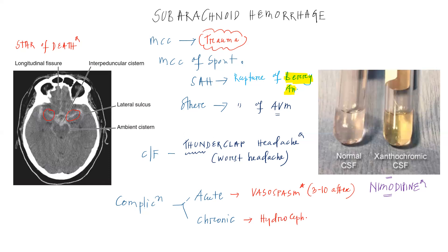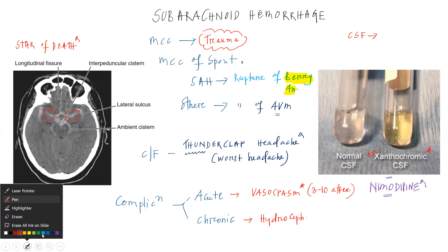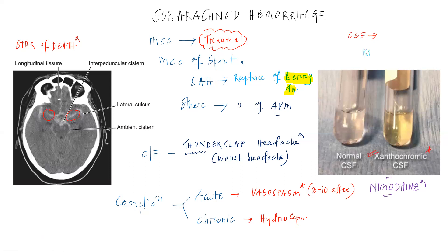Apart from the CT scan, one more important investigation finding to remember is xanthochromic CSF. If you perform a CSF analysis for these patients, you will get yellow-colored CSF known as xanthochromic CSF. This is because the RBCs in the subarachnoid space break down into bilirubin, and this bilirubin gives the yellow color described as xanthochromic CSF.